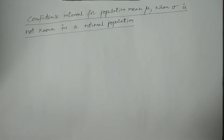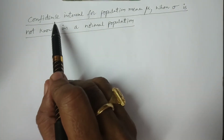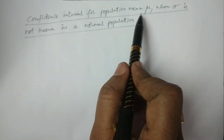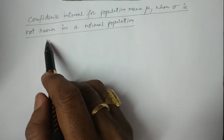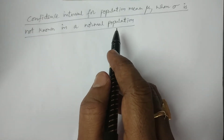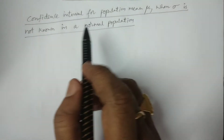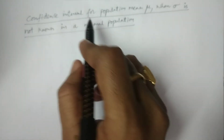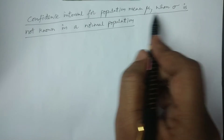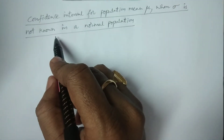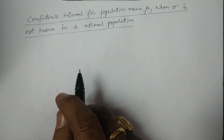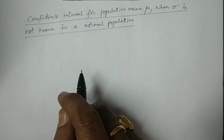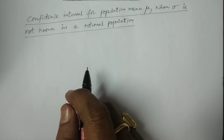Welcome to B.S.C. Statistics students. In this class I explain confidence intervals for population mean μ when σ is not known in the normal population. We already done the σ-known case, where we use normal distribution. Now, since σ is not known, we have to use the T distribution.